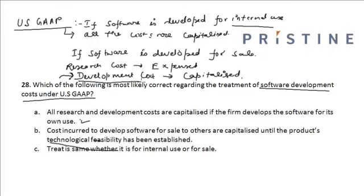Once the technological feasibility has been established, the entire cost from that stage is recognized under development cost and is capitalized. But before technological feasibility has been established, all costs are recognized under research cost and hence expensed. So option B's claim that all research costs are capitalized is incorrect — this option is incorrect.